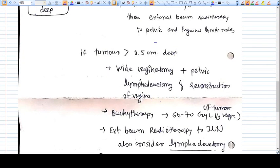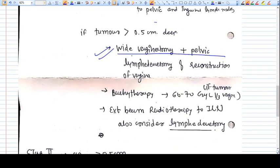If the tumor is more than 0.5 centimeter deep, then you consider this tumor can have lymph node involvement. Wide vaginectomy should be done, pelvic lymphadenectomy including inguinal should also be done, reconstruction of vagina should be done, and brachytherapy is given as usual at 60 to 70 Gray.